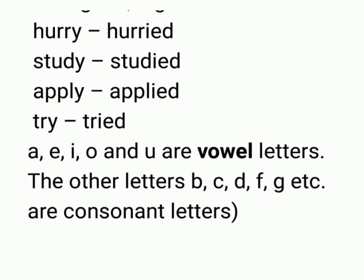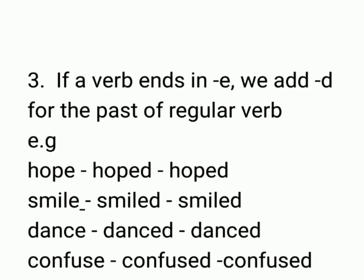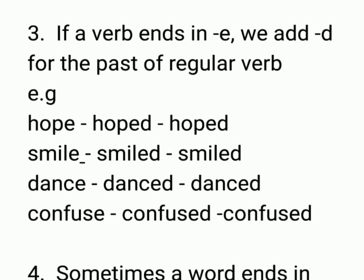अब third rule है: if a verb ends in 'e'. अगर verb के last में खुद 'e' हो, तो हम double 'e' नहीं लगाएंगे — हम simply 'd' लगाएंगे। जैसे hope — simply 'd' लगाया — hoped, hoped. Smile — smiled, smiled. Dance — danced, danced. Confuse — confused, confused. जो verb के last में 'e' होता है, उसके past और past participle के लिए 'e' के बाद simple 'd' लगा देंगे।